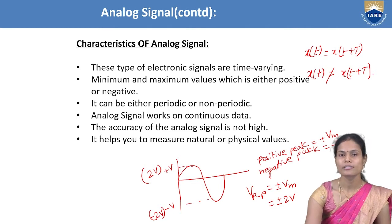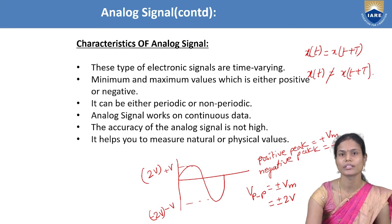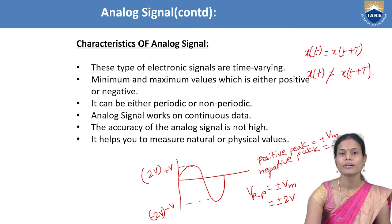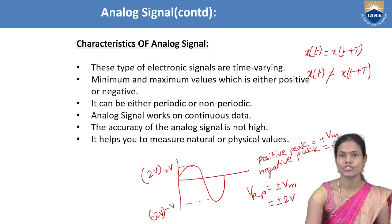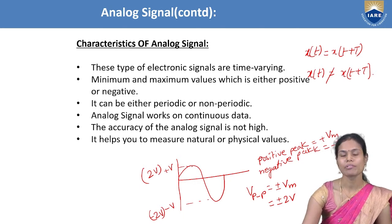The accuracy of analog signals is not very high. These signals are used to measure some physical or natural values. These are the specific characteristics of analog signals, applicable for any kind of analog signal.